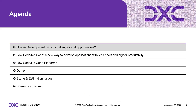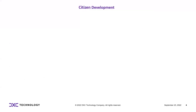Right now we go across the agenda: citizen development — what are the main challenges and opportunities. Then we see a bunch of stuff about low code, no code. First of all, no code is a new way to develop applications with less effort and higher productivity. Then we take a look at the low code, no code path, run across the demo, and discuss some sizing and estimation issues.